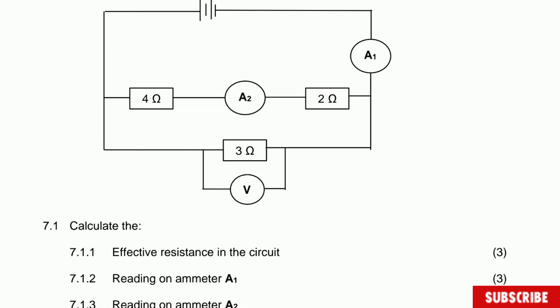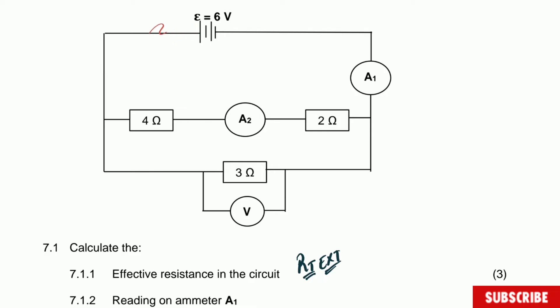Question 7.1 asks to calculate the effective resistance in the circuit. Effective resistance refers to the total external resistance. In this circuit, the current comes along and when it reaches a common terminal, it splits in two parts — meaning those two sides of the circuit are in parallel. The 4 and 2 ohm resistors are in series with each other, but that combination is in parallel with the 3 ohm resistor.